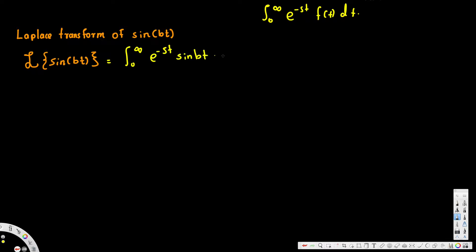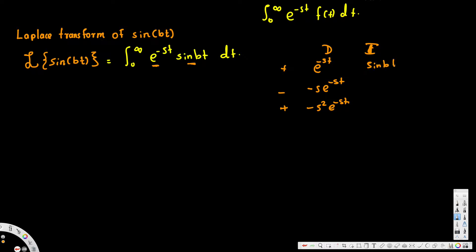We need to do the integration. The easy method is to use differentiation and integration together in a tabular approach. For differentiation we take e to the power of negative st, and for integration we take sin(bt). The first differentiation gives negative s times e to the negative st, the second gives negative s squared times e to the negative st. For integration of sin(bt), we get negative 1 over b times cos(bt), and integrating again gives negative 1 over b squared times sin(bt).